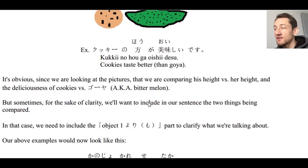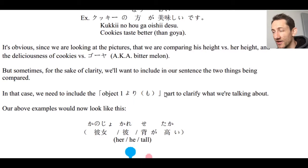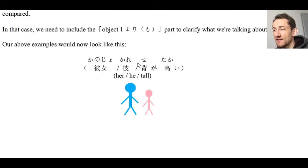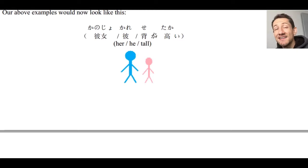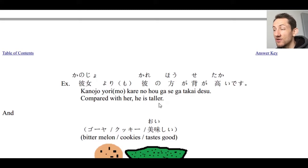For the sake of clarity, sometimes we'll want to include the object one yori mo part. In the following example sentences, if we want to include both objects to say 'he is taller than her,' we could say kanojo yori kare no hou ga seiga takai desu, or kanojo yori mo kare no hou ga seiga takai desu — compared with her, he is taller. This is a more literal translation, but you can simply say he is taller than her.